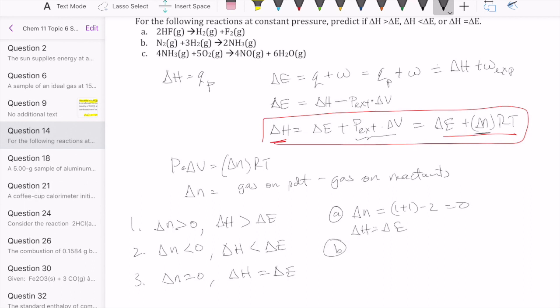Let's take a look at case number two. Here we have our delta N being equal to two for the ammonia minus one plus three, which gives us a total of negative two. So if our delta N is negative, that means our delta H is less than our delta E.